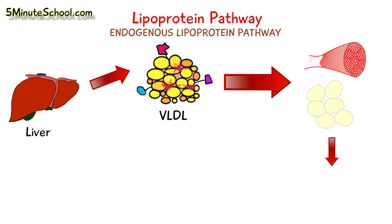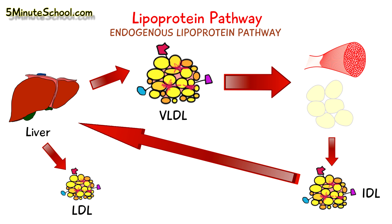Intermediate-density lipoprotein circulates the body and is taken up by the liver, where it's converted into low-density lipoprotein via the enzyme hepatic lipase. Low-density lipoprotein has a very high cholesterol content and functions to circulate around the body and deposit cholesterol in target cells.